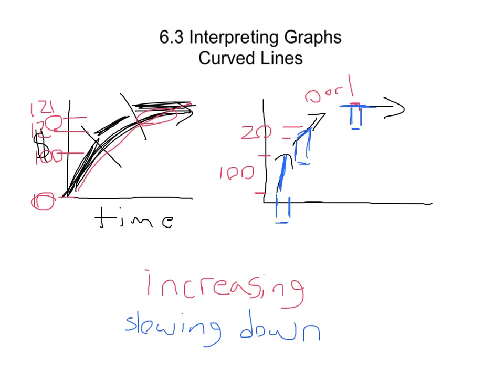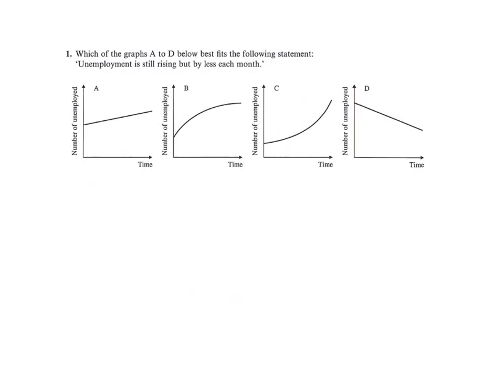Alright, so let's look at a question. This is going to be number one of exercise nine. Here is a question and four possible graphs that we're going to choose from. It says, which of these best represents the statement: unemployment is still rising, in other words going up, but by less each month - in other words, not as fast. Well first of all, we can obviously cross out this one because it's not rising. It's going down. As time goes forward, this is going down. This is a negative slope going downhill. So let's just get rid of that one.